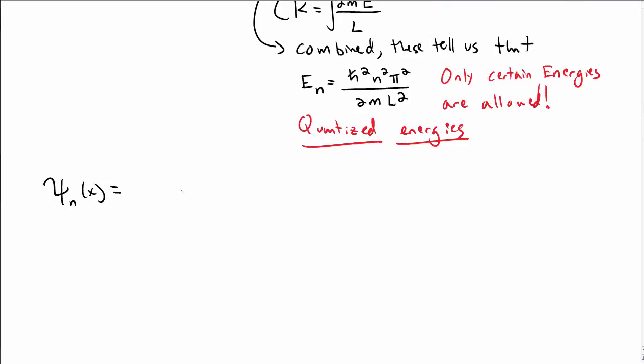Okay, so we found k, and that tells us ψ_n is A sin(nπx/L), but that's only true between 0 and L. Outside of 0 and L, the wave function is 0 everywhere else.